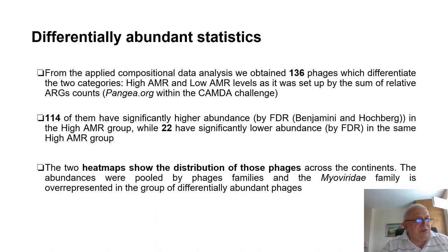We used the ALDEX2 package from R using Bayesian methods. From the applied compositional data analysis, we obtained 130 phages with differential abundance across two categories, and 114 of them have significantly higher abundance by false discovery ratio in the high AMR group.